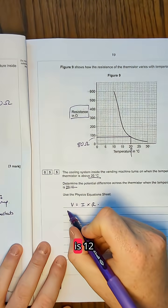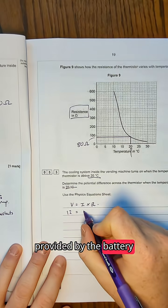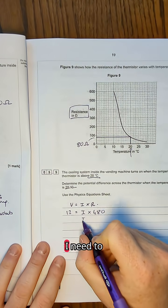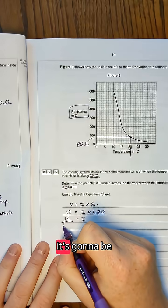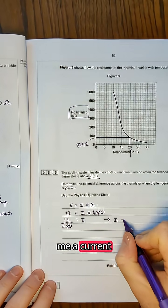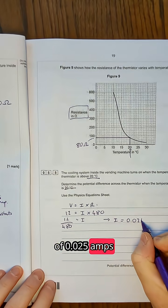So potential difference is 12. That's the potential difference provided by the battery equals the current times by 480. So to work out I, I need to do 12 divided by 480. It's going to be quite a small number, but that's OK. Currents are normally quite small. And that gives me a current of 0.025 amps.